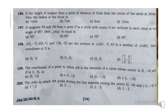Question 196: If the length of a tangent from a point at a distance 25 cm from the center of the circle is 24 cm, then the radius of the circle is 7 cm. Question 197: Tangents PA and PB from a point P to a circle with center O are inclined to each other at an angle of 80 degrees, then angle POA is 50 degrees. Option A.